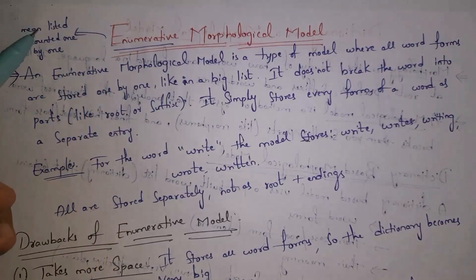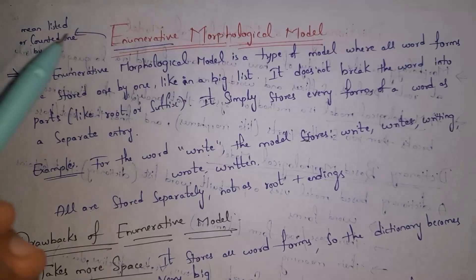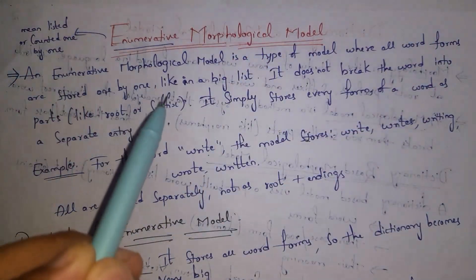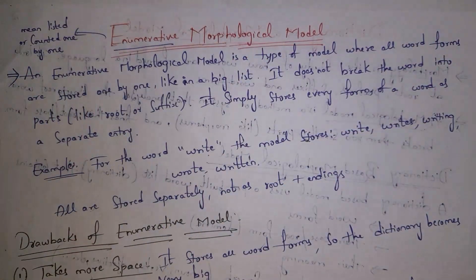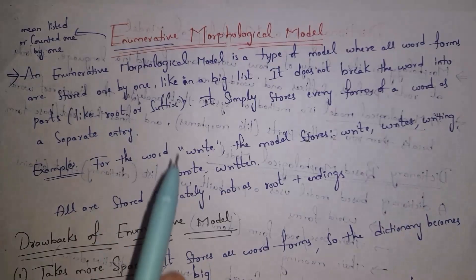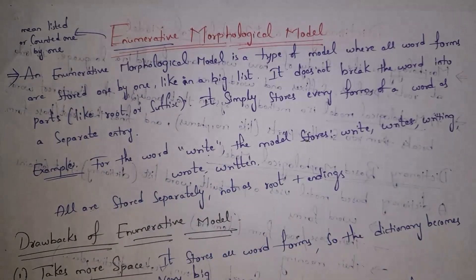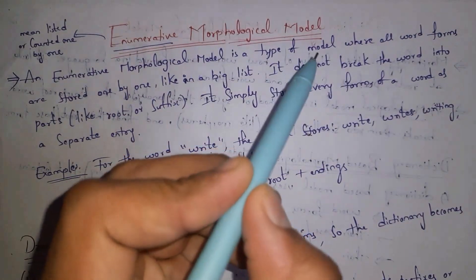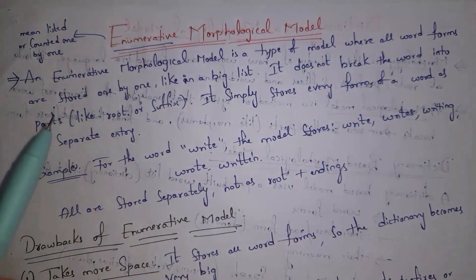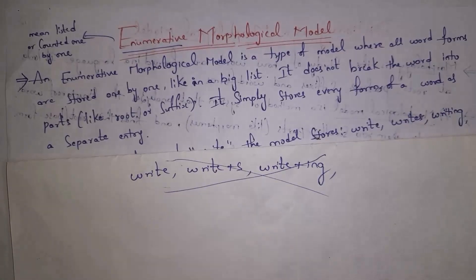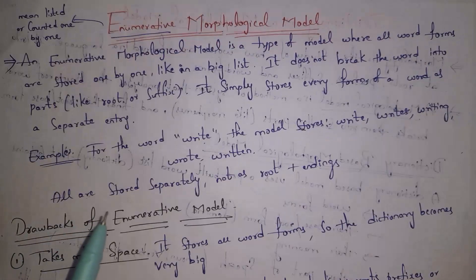Next, the enumerative morphological model. 'Enumerative' means listed one by one or counted one by one. An enumerative morphological model is a type of model where all word forms are stored one by one in a big list. For example, for the word 'write', all its forms — write, writes, writing, wrote, written — are stored in a single list. This model does not break words into parts like root or suffix; it simply stores the entire word in a list.